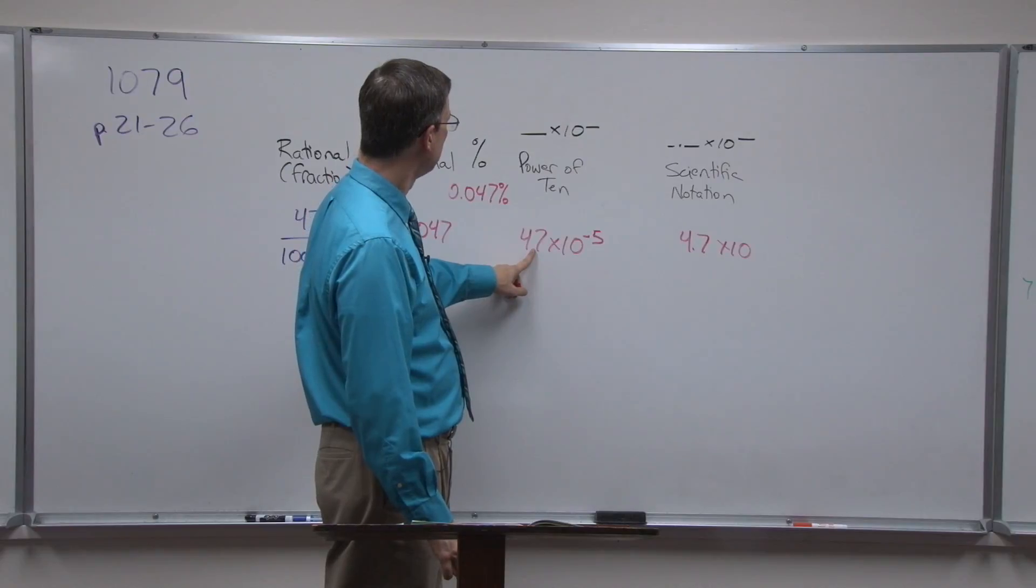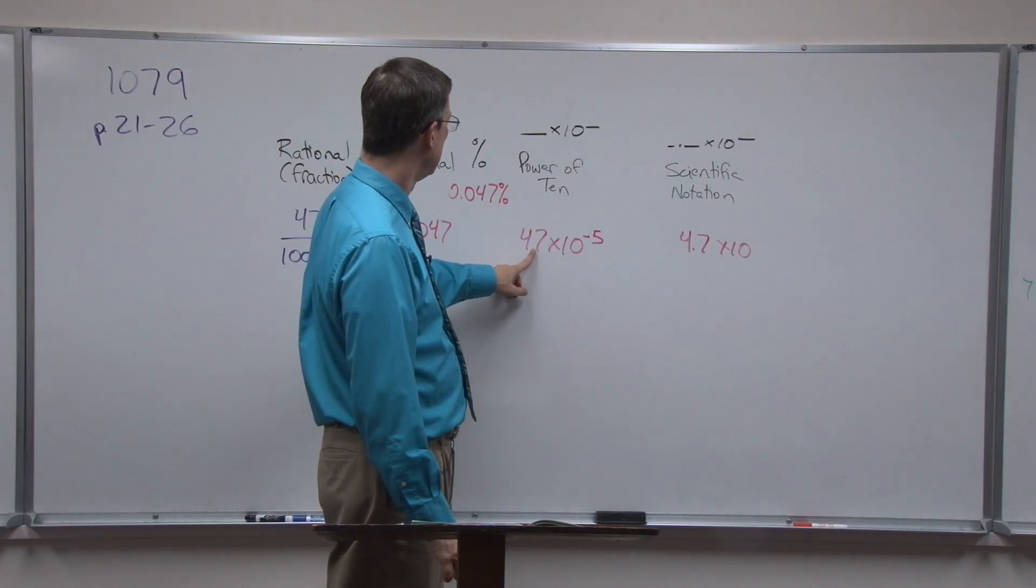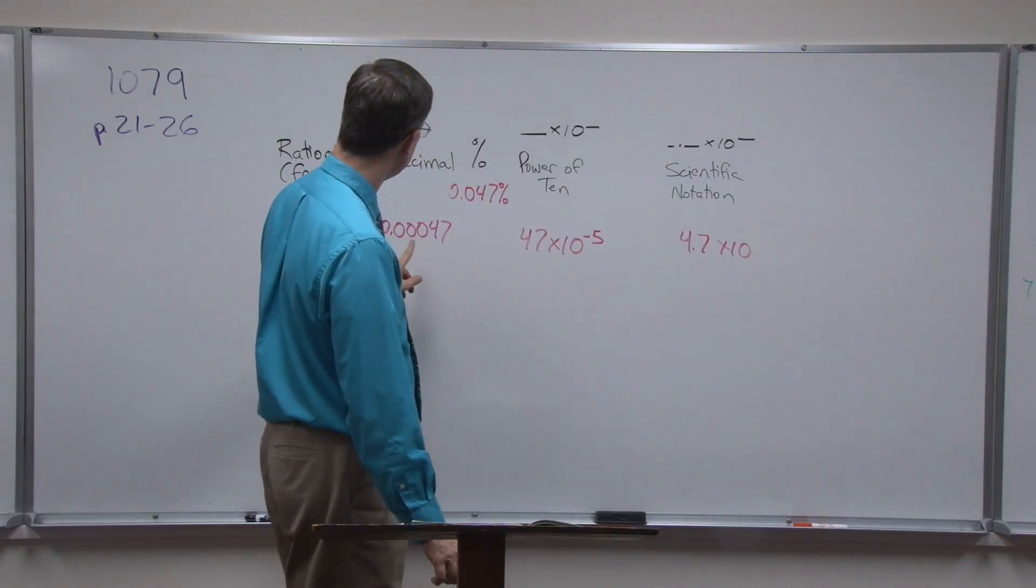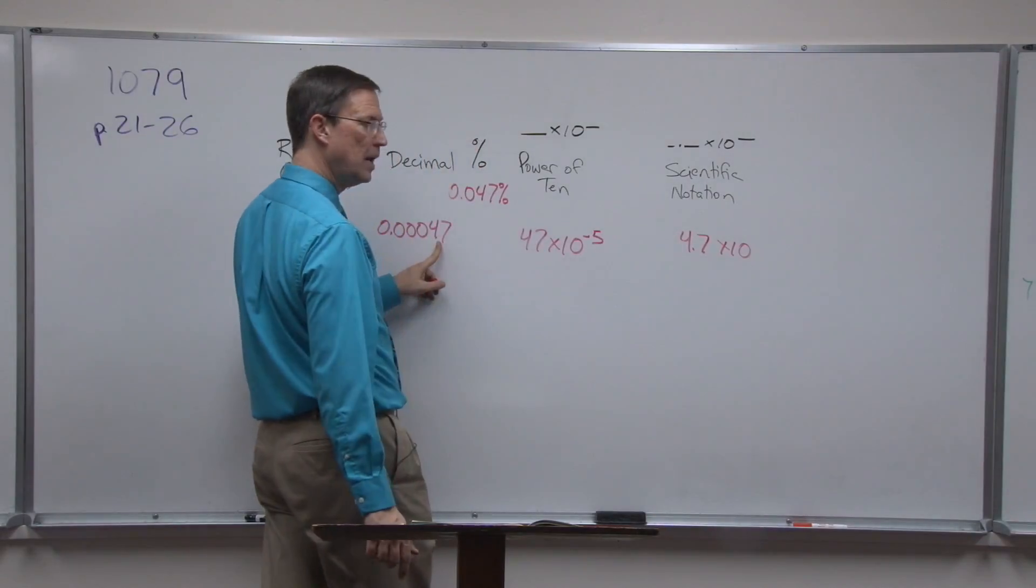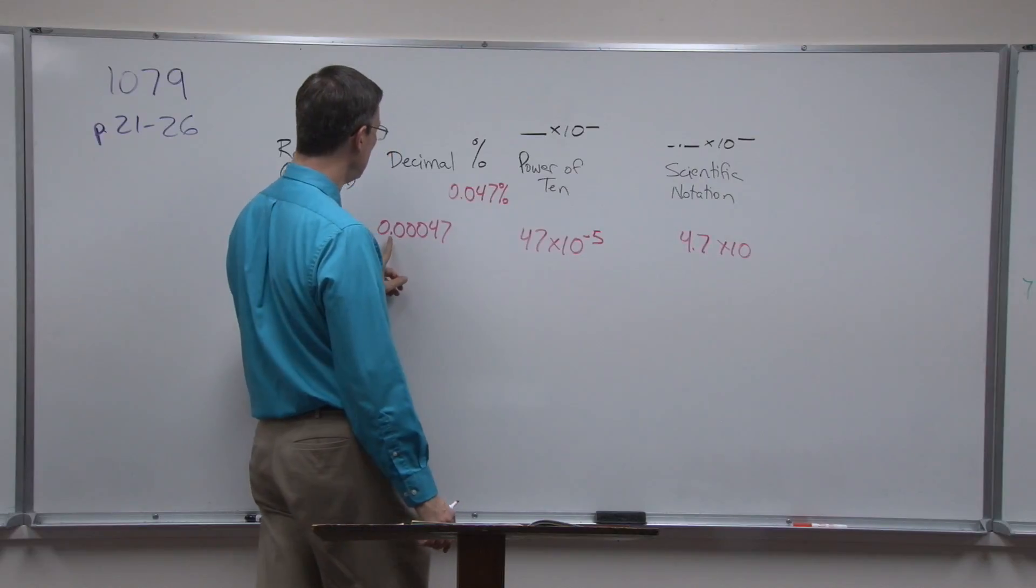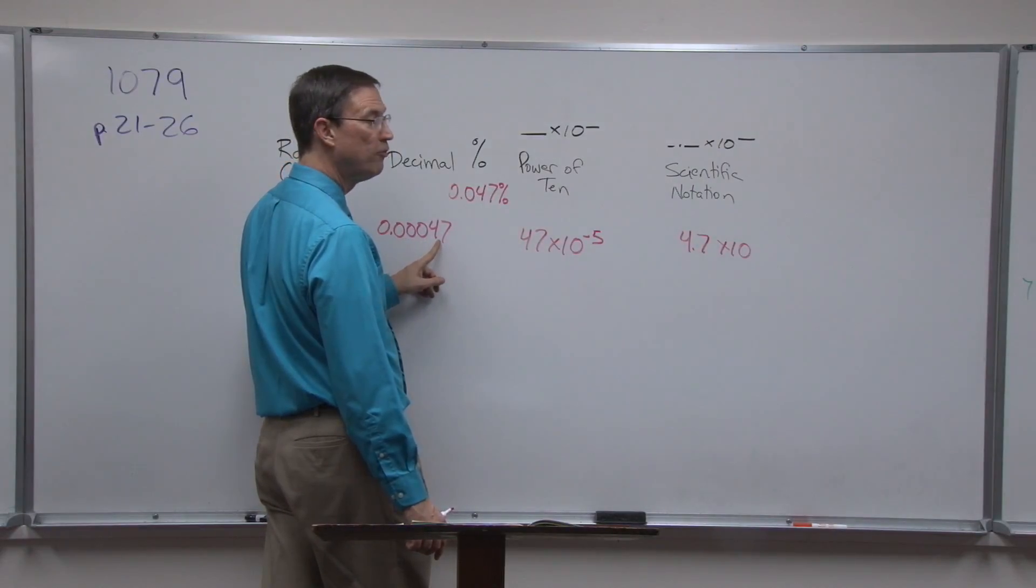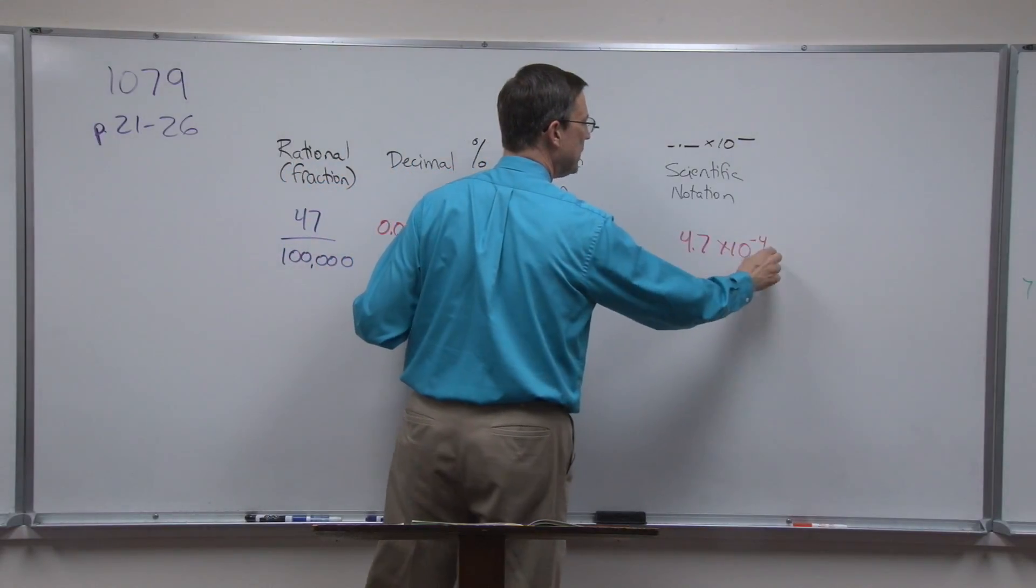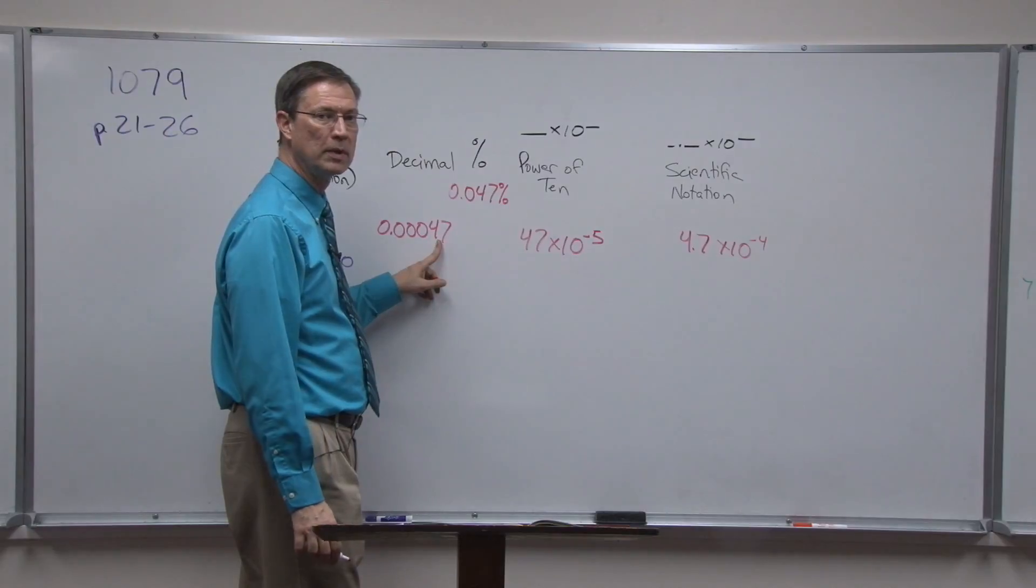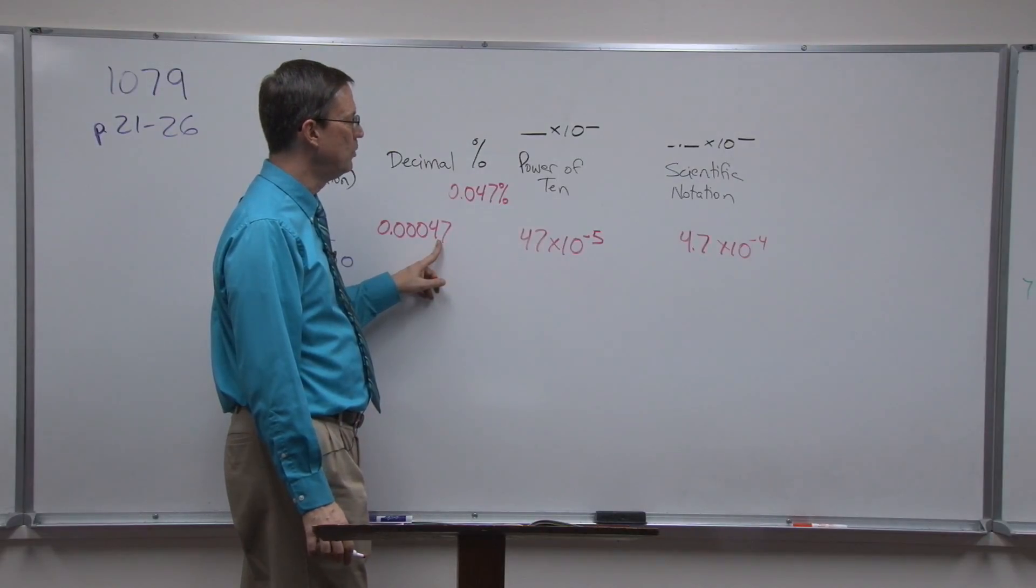And so now it's 4.7. So now let's think about this. For the decimal to have gotten right here behind the four, it's not having to move five places, it's only moving one, two, three, it's moving four places. And so this exponent becomes negative four, because that tells us how many places it had to move.